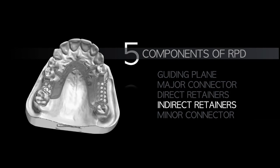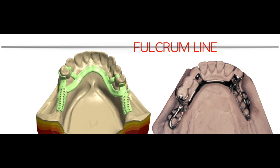The fourth component is the indirect retainer. Before placing the indirect retainer, you need to understand the fulcrum line. The fulcrum line connects the most distal rests. For this particular case, there is a rest seat on each side; connecting the centers of these most distal rest seats creates the fulcrum line. Along the fulcrum line, the prosthesis can rotate up and down. Another case example: connect the most distal rest seats on both sides to identify the fulcrum line.